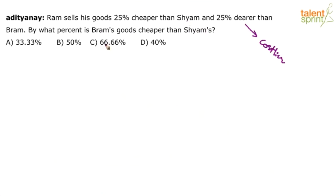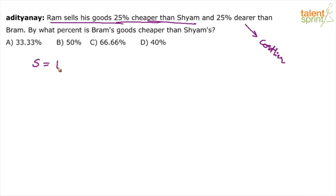Since it is only about percentage, you can assume a value for one of these guys, accordingly find out the other two values, and then do the percentage calculation. Look at the first part: Ram sells his goods 25% cheaper than Shyam. So let us assume Shyam sells his goods for 100 rupees. So Ram will sell his goods for what value? 100 minus 25%.